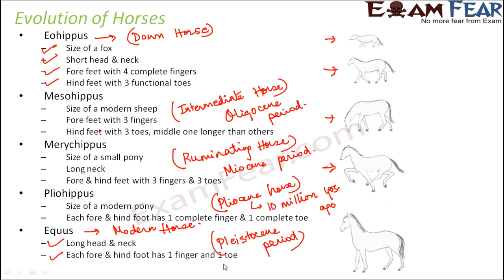Looking at the full series — from Eohippus to Mezohippus to Merichippus, Pliohippus, and finally Equus — we can see that over time, horses evolved with increasing body size, greater height, modified forefeet and hindfeet, and even their teeth changed with time.